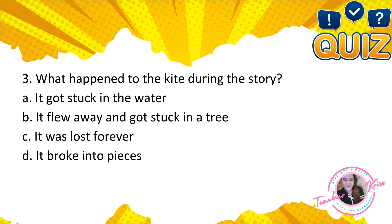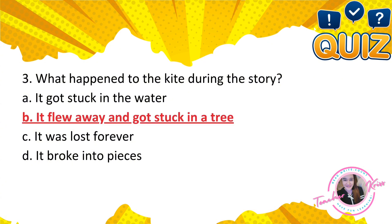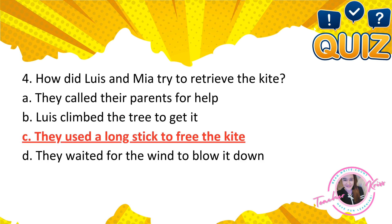Number 3: What happened to the kite during the story? A. It got stuck in the water, B. It flew away and got stuck in a tree, C. It was lost forever, D. It broke into pieces. The correct answer is letter B — it flew away and got stuck in a tree. Number 4: How did Luis and Mia try to retrieve the kite? A. They called their parents for help, B. Luis climbed the tree to get it, C. They used a long stick to free the kite, D. They waited for the wind to blow it down. The correct answer is letter C.